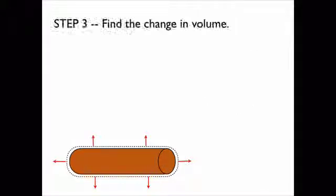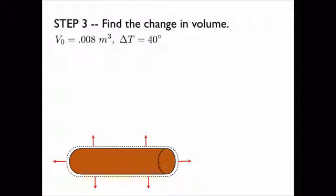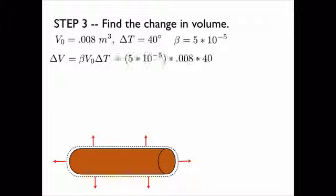Now it's a simple matter to find the change in volume. We have the original volume, the change in temperature, and the volume thermal expansion constant for copper which is different than the constant we used to find the linear expansion. Then we just use this formula which is identical in form to the previous formula. We plug in what we know and we find the change in volume due to the increase in temperature.